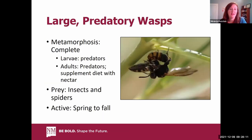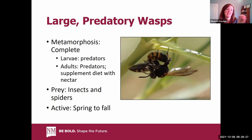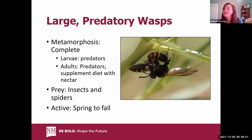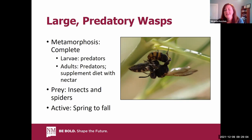Finally, our predatory wasps. We group them into two types. The first are large predatory wasps — the larvae are predators but we don't see them because they're underground within the nest. The adults are also predators but visit flowers for nectar. Wasps eat a variety of different prey, and activity is based on species. They nest in soil, cavities, or wood. A lot of our wasps are actually solitary and rarely sting, so they are good to have around.